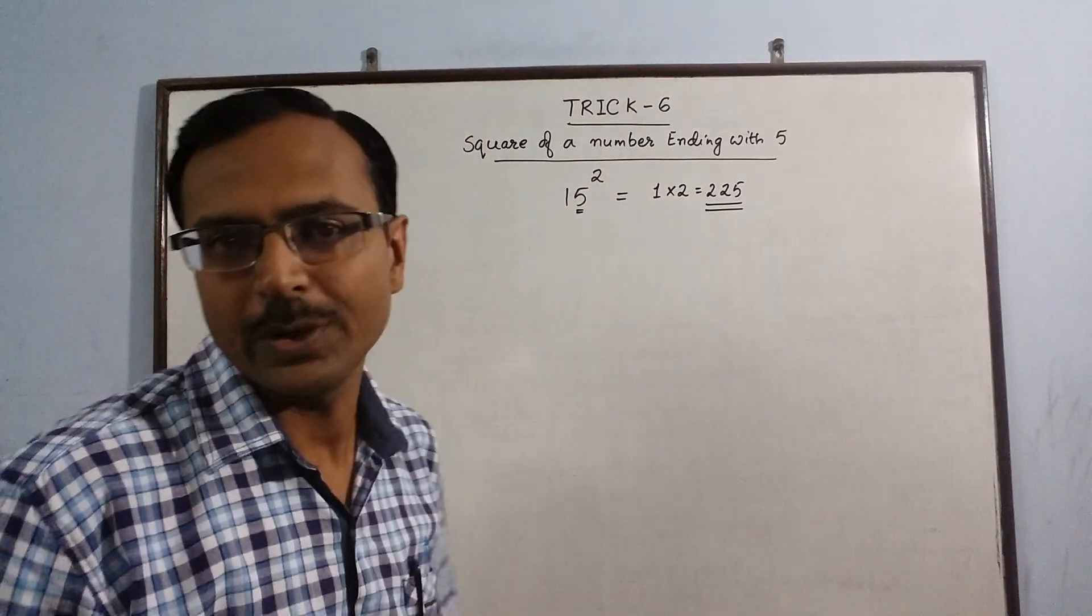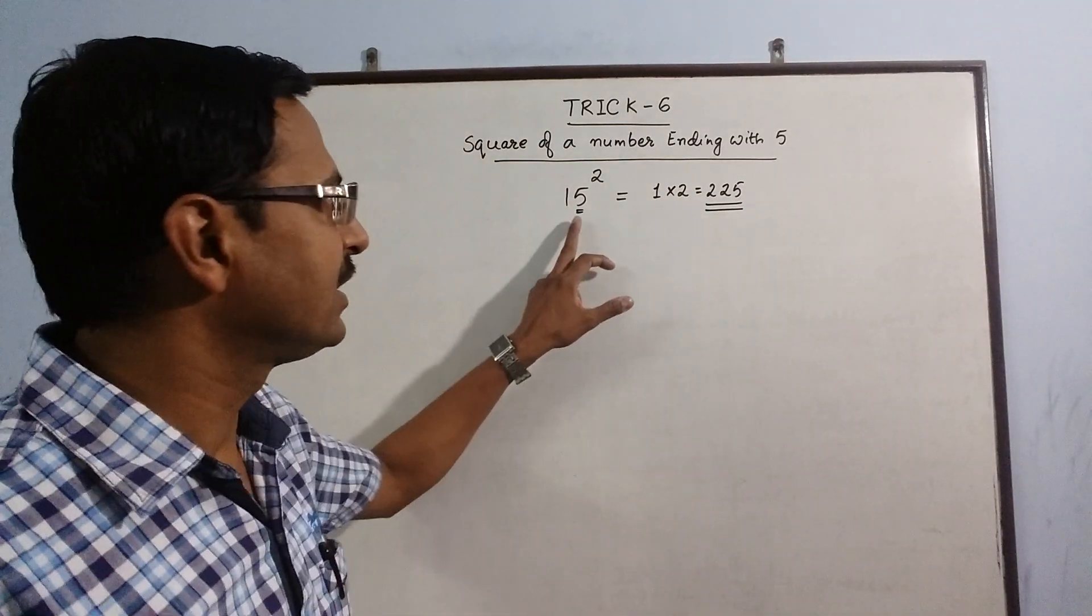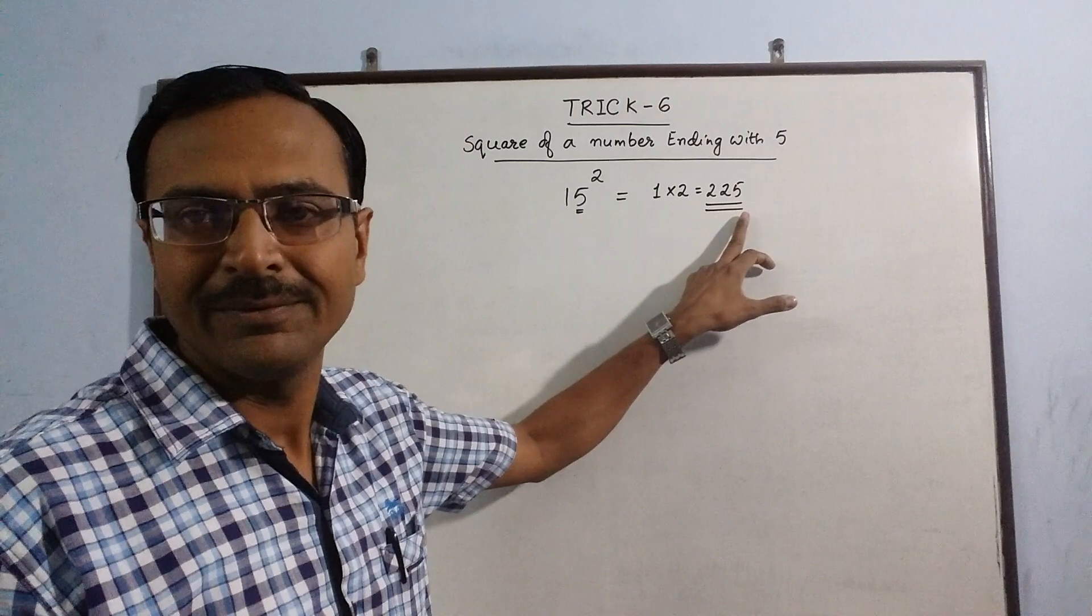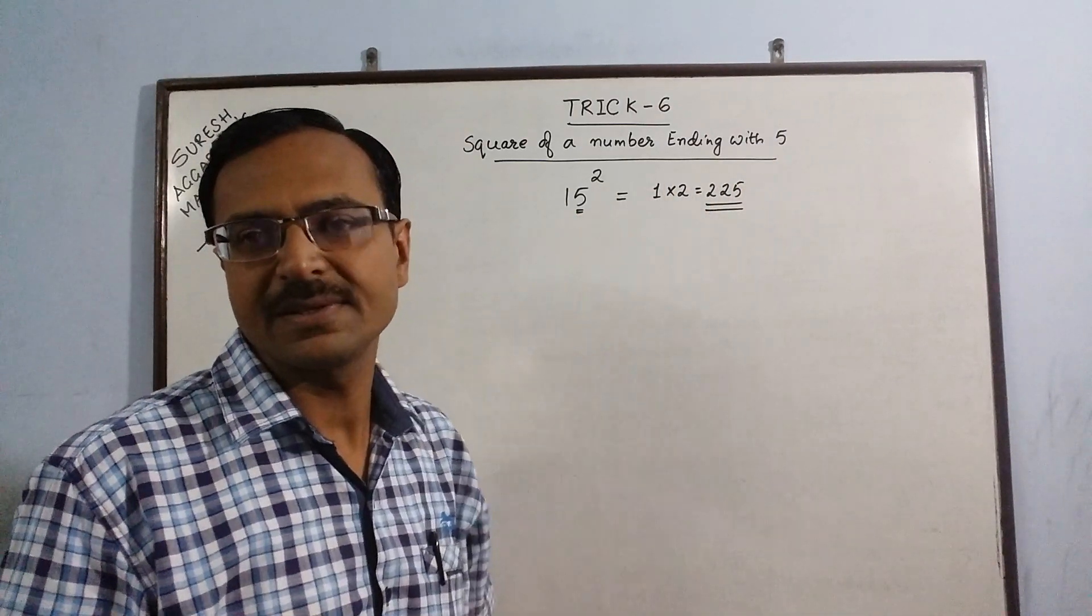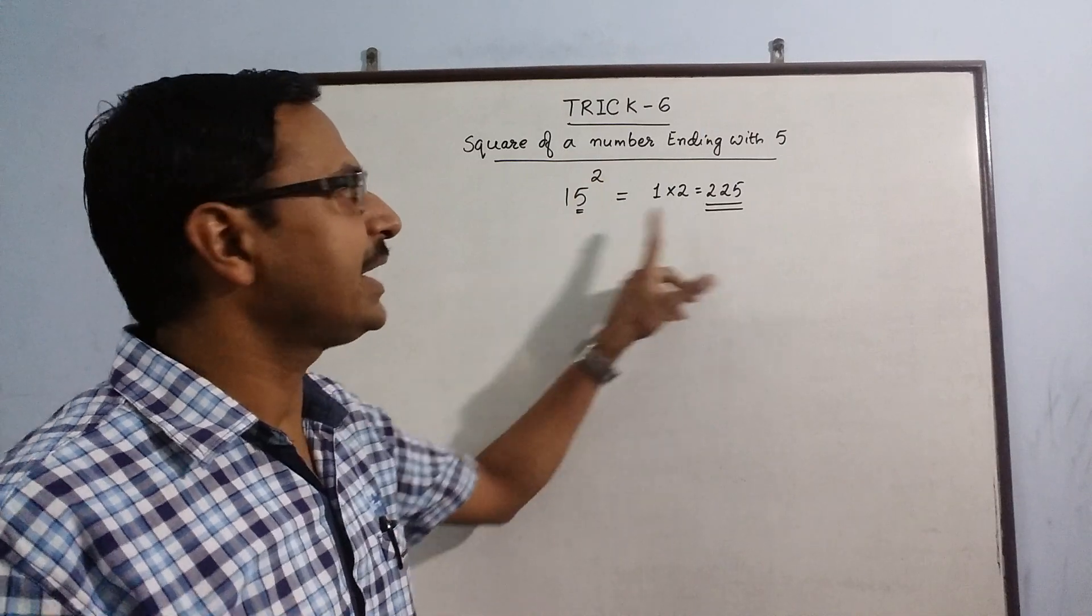So 15 square is 225. It is because the square of 5 is 25, and all numbers which have 5 in its units place, the square of that number ends with 25.